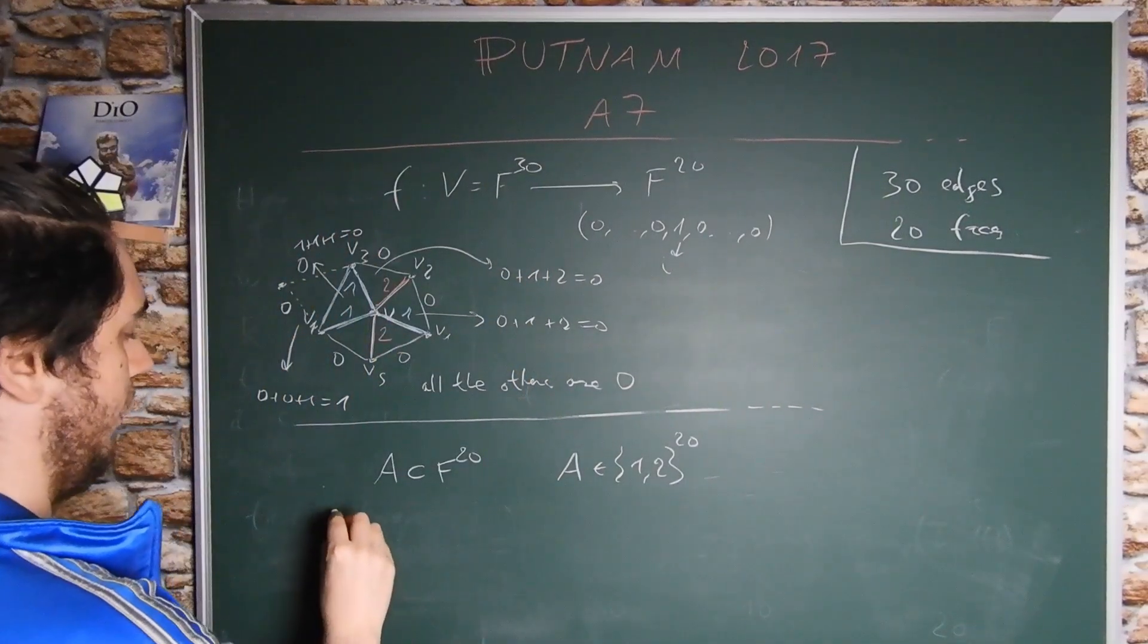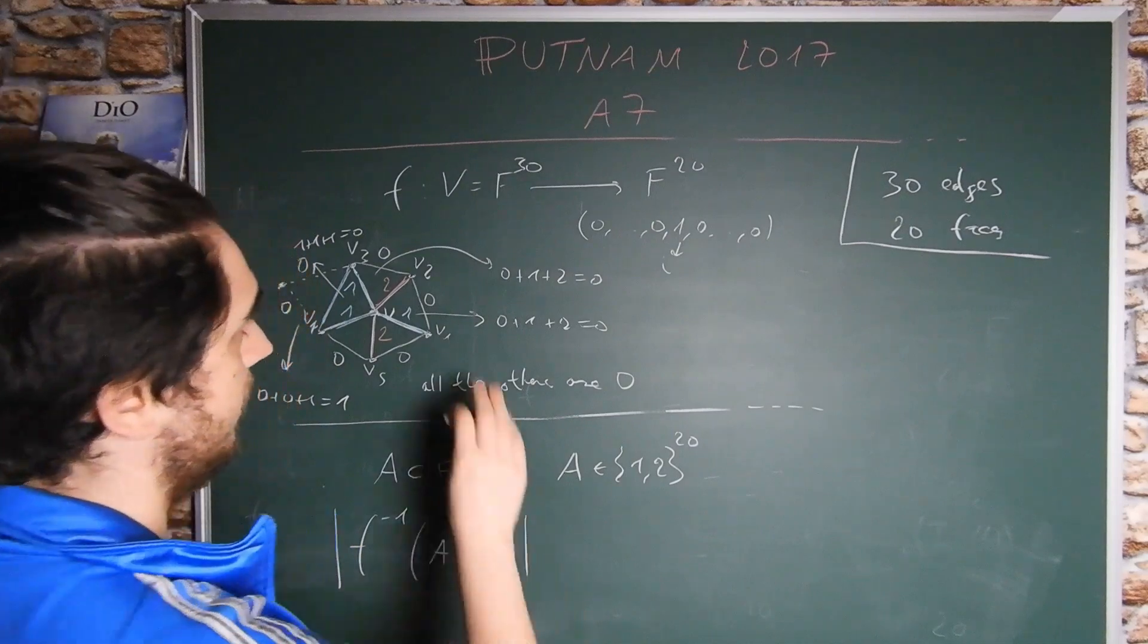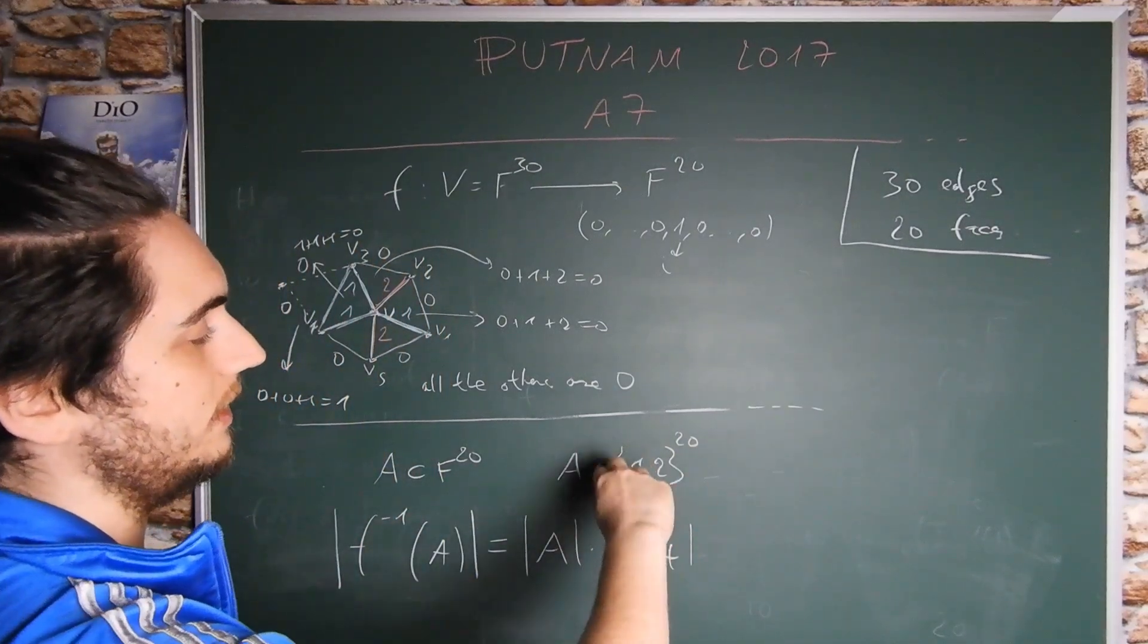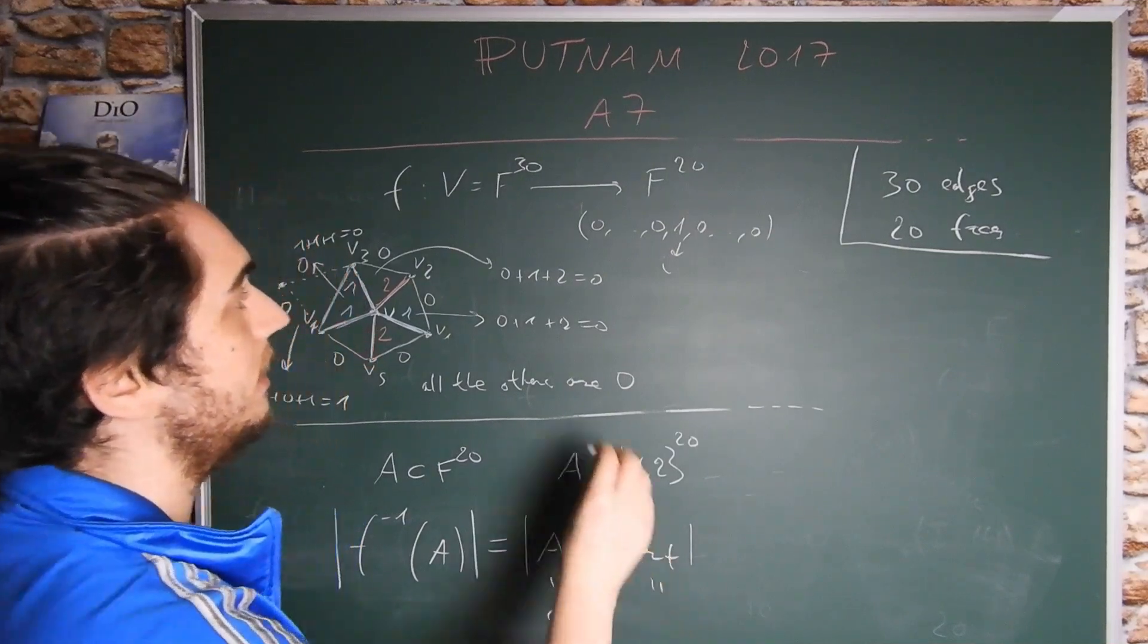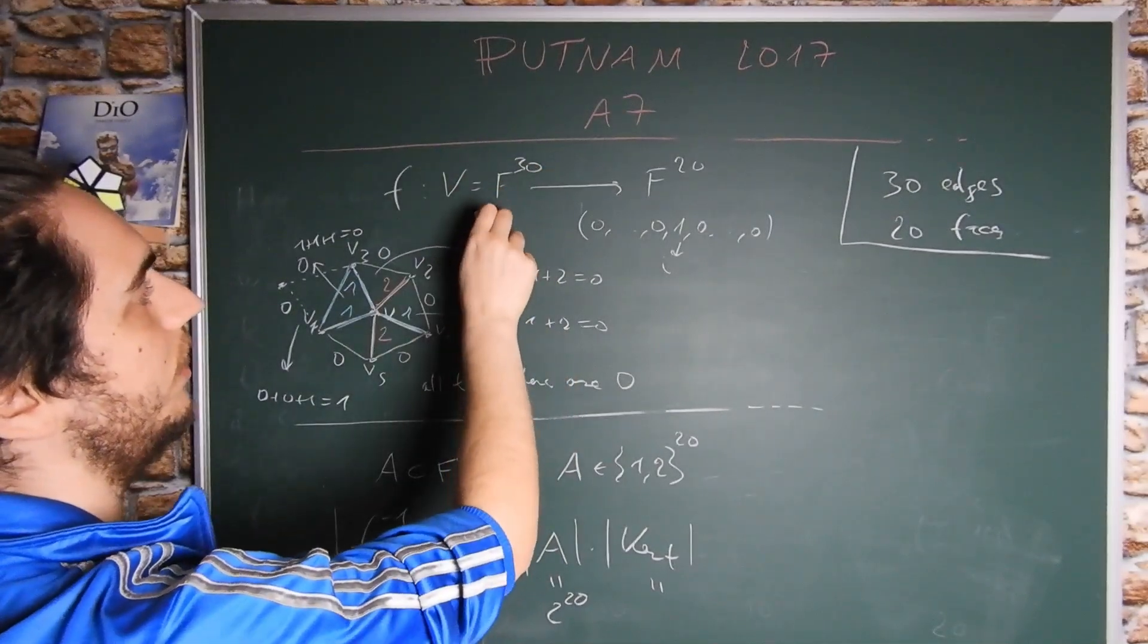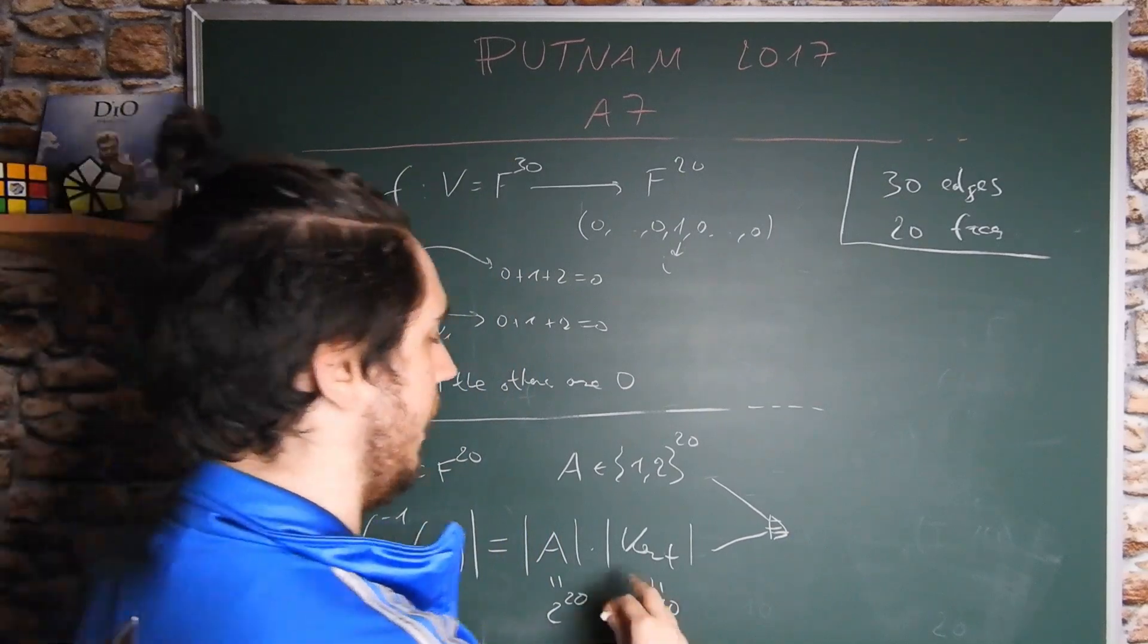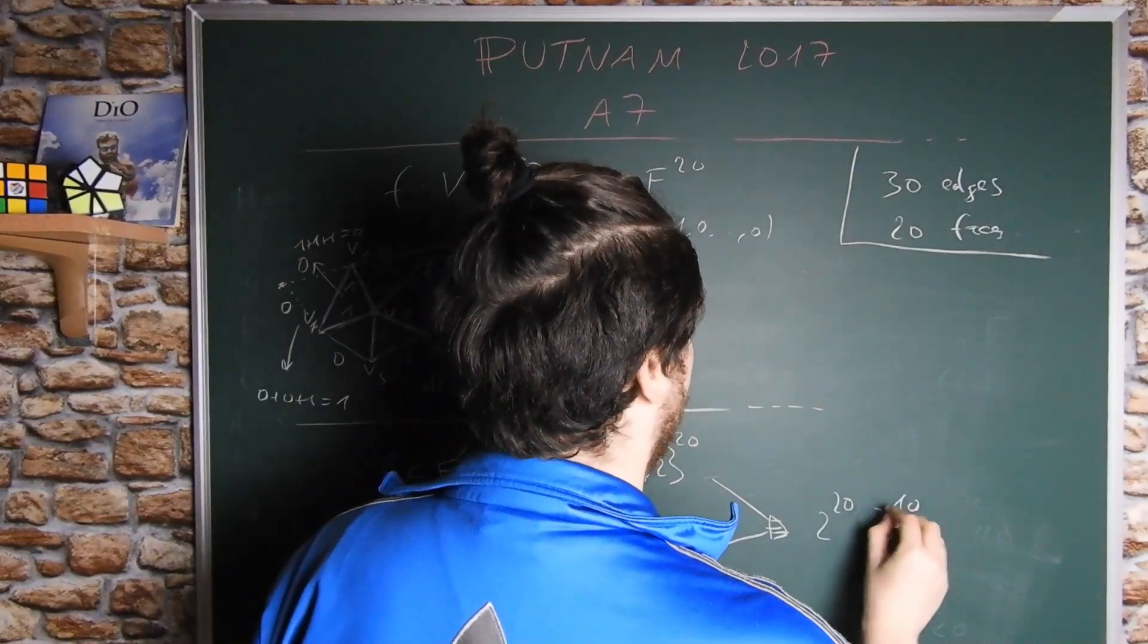Finally, we want to compute the cardinality of F to the minus 1 of A. Since F is a linear map, this is the cardinality of A times the cardinality of the kernel of F. The cardinality of A, since A is the set {1, 2} to the 20, is exactly 2 to the 20. While the cardinality of the kernel of F, since the kernel is a vector subspace of dimension 10 of F to the 30, is exactly 3 to the 10. So this finishes our problem, and the set of all possible colorings has 2 to the 20 times 3 to the 10 elements.